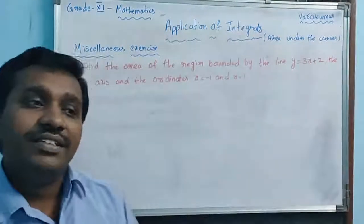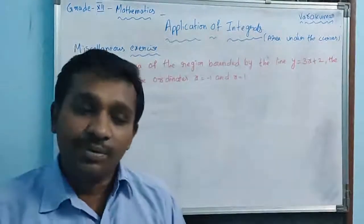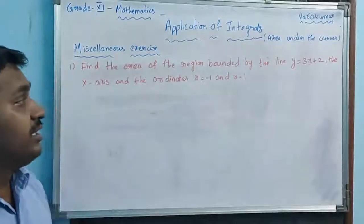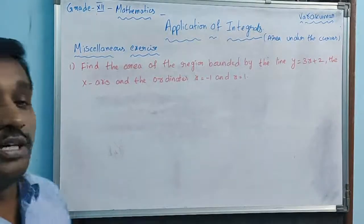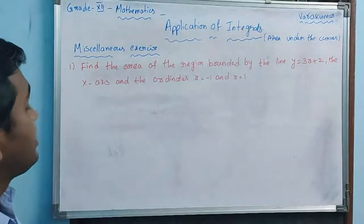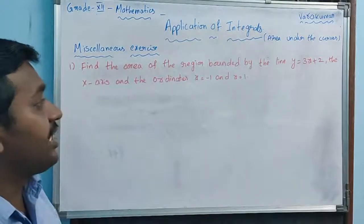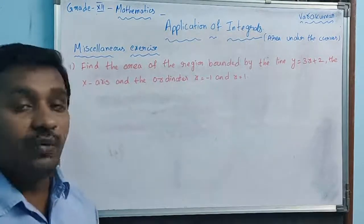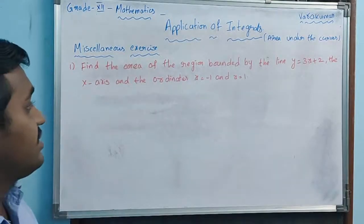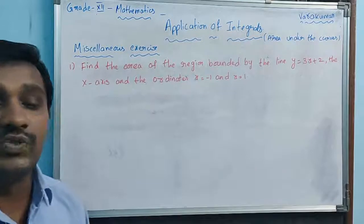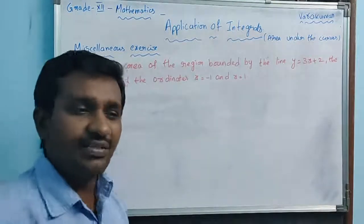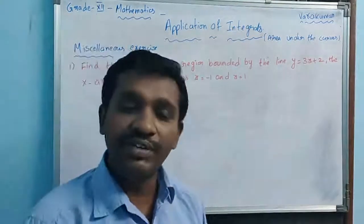Good morning children, welcome to this session. Today we are going to discuss the miscellaneous exercise sums. This one: find the area of the region bounded by the line y = 3x + 2, the x-axis, and the ordinates x = -1 and x = 1. These questions we have already learned — they are very simple ones.